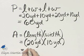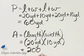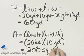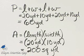20 times 10, that's 200. Yards times yards, that gives us square yards. The area enclosed by the rectangle is 200 square yards.